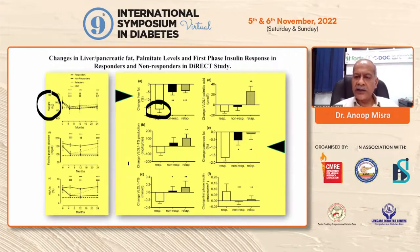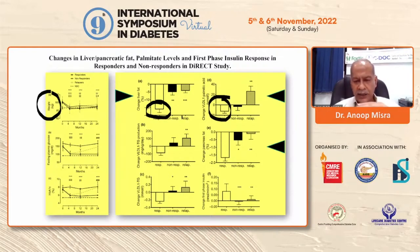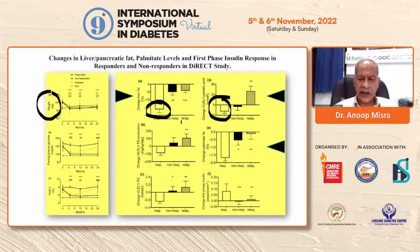Looking at palmitic acid content, there was a marked decrease in responders and an increase in relapsers. Palmitic acid can cause apoptosis of beta cells. This demonstrates the role of both liver fat and pancreatic fat, and is particularly important for the reversal of diabetes.